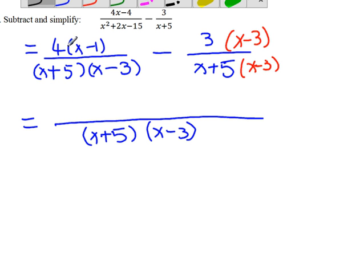So numerator, we have, let's do this, distribute 4 times x, which is 4x, 4 times negative 1, which is minus 4, right? Now, I will suggest write a couple more steps. So it's minus 3 times (x-3), right?